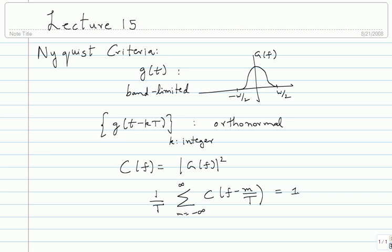W is fixed, and then the next choice is T, the symbol time. In your signaling scheme, you convert bits into symbols and think of your symbols as an impulse train separated by symbol time T. The Nyquist criteria is going to tell you how to choose T and how to choose your transmit filter response G of T.